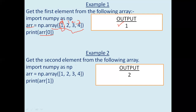Example 2: get the second element from the following array. We import NumPy as np, then create an array using np.array by passing a list. In the next statement we print arr[1]. The second element has index 1, so the output which will be printed is 2.